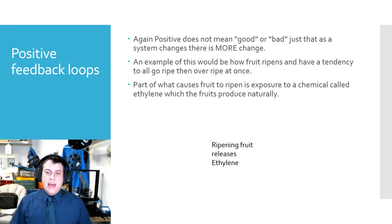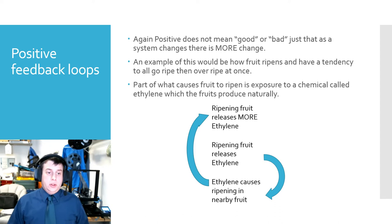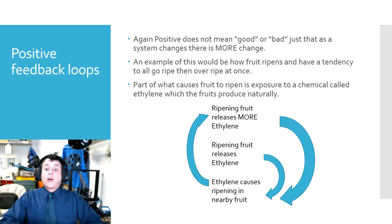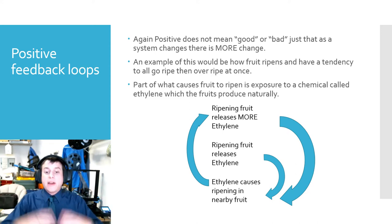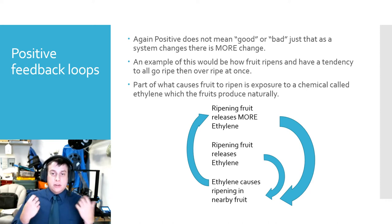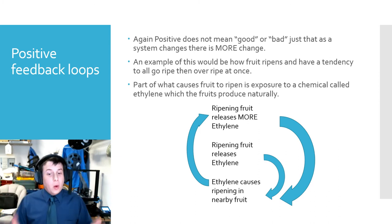You start with a ripening fruit and it releases ethylene. That ethylene goes out into the system and causes other fruit to ripen — maybe on that same tree or plant, or even other plants nearby. This causes more fruit to ripen and release ethylene, which causes further nearby fruits to ripen. Pretty soon you've got a whole forest of trees that are all ripe at the same time. This is a positive feedback loop: as the fruit ripens it produces ethylene, that ethylene causes more fruits to ripen and release more ethylene, and this can turn them overripe — what we'd call rotten. One bad apple overripens the whole bunch. That's where that expression actually comes from.